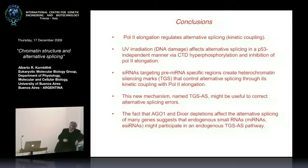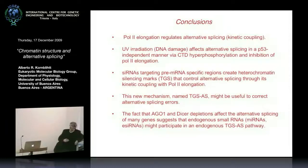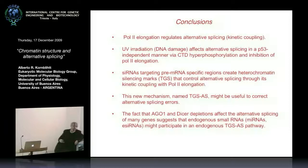In conclusions: Pol2 elongation regulates alternative splicing — kinetic coupling. UV radiation, through DNA damage, affects splicing in a P53-independent manner via hyperphosphorylation of the CTD and inhibition of Pol2 elongation. Intronic siRNAs targeting pre-mRNA-specific regions can create heterochromatin silencing marks that control alternative splicing through kinetic coupling with Pol2 elongation — we call this TGSAS. AGO1 and DICER depletions affect alternative splicing of many genes, suggesting endogenous small RNAs may participate in an endogenous TGSAS pathway, and TGSAS might be useful to correct alternative splicing errors in a sequence-specific manner.